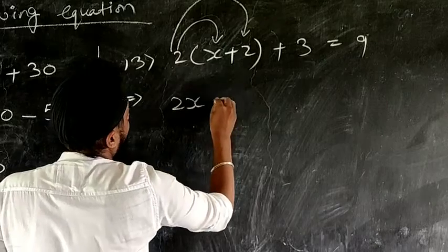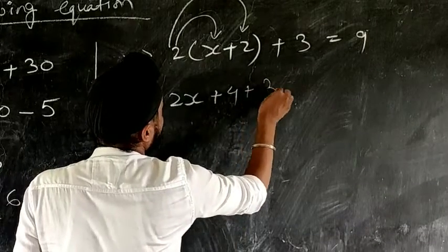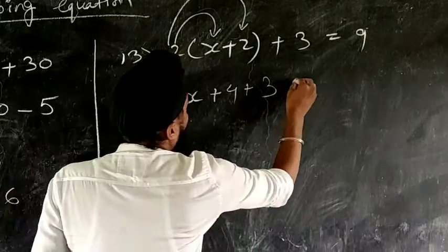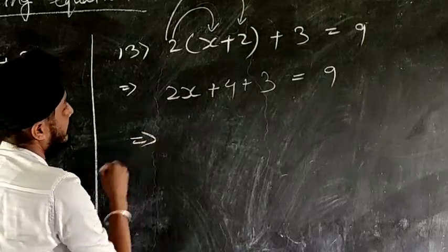Now the next step will be 2x, okay, 2x plus 4 plus 3 will be 7, equal to 9.